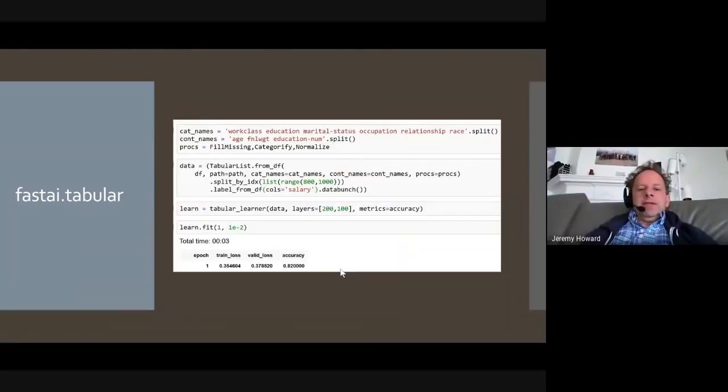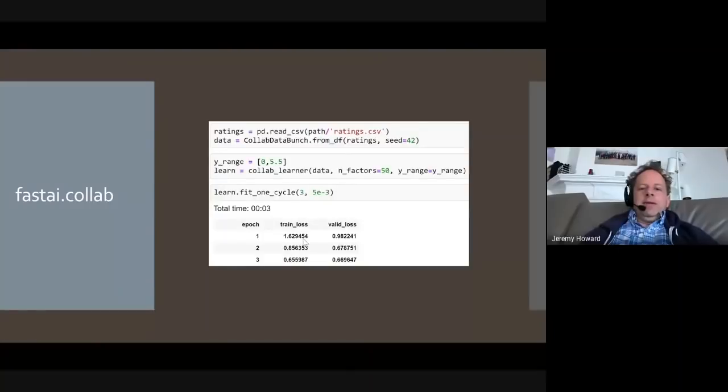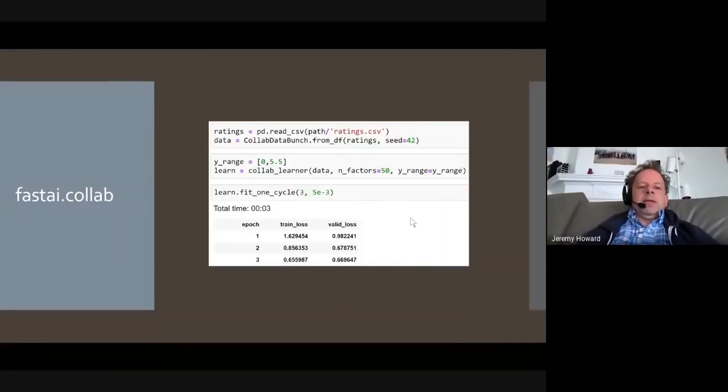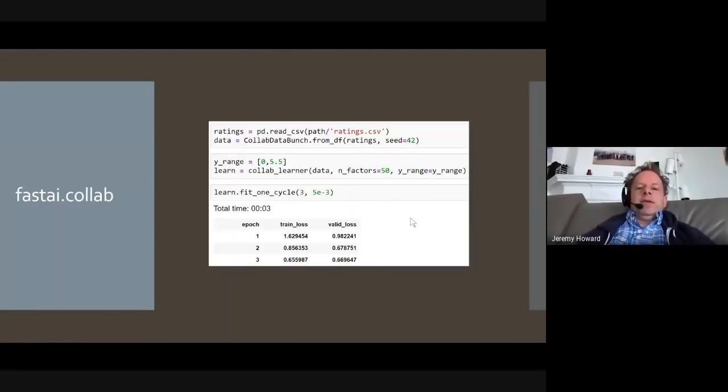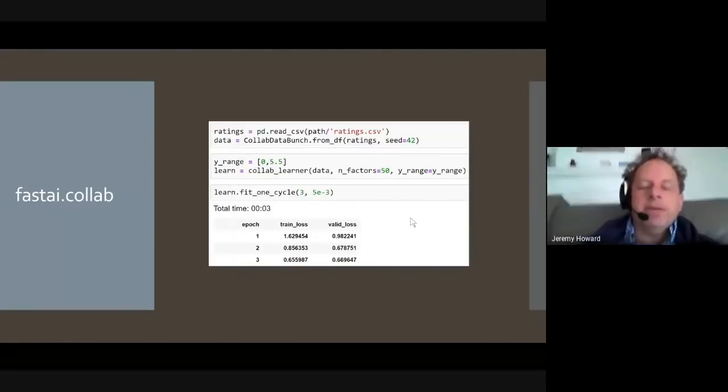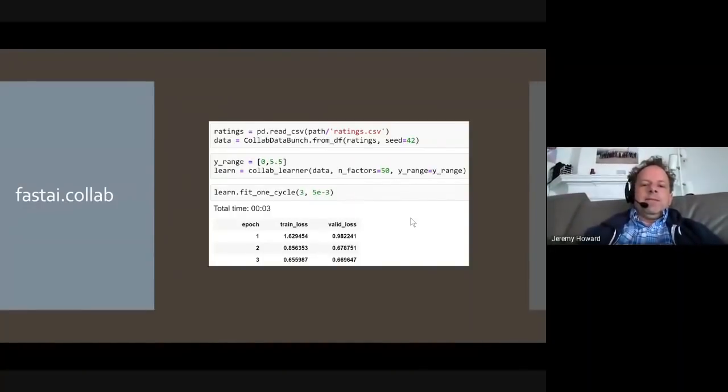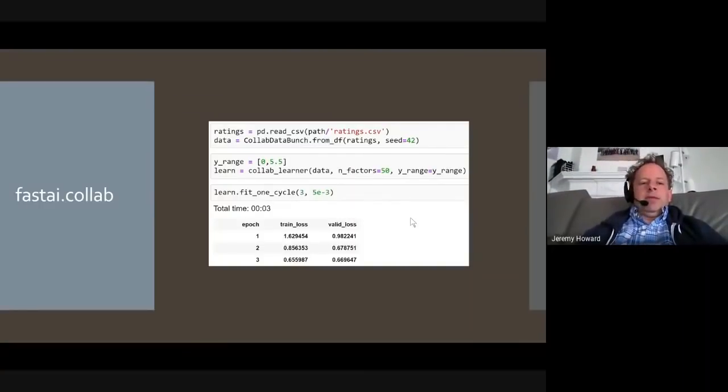As you can see in here, this is working on IMDB on a single epoch in four minutes. The accuracy here is basically what was the state-of-the-art as of a couple of years ago. Tabular or time series analysis, same deal. Basically, a few lines of code, nearly exactly the same lines of code, and you'll get a great result from your tabular data. And ditto for collaborative filtering.